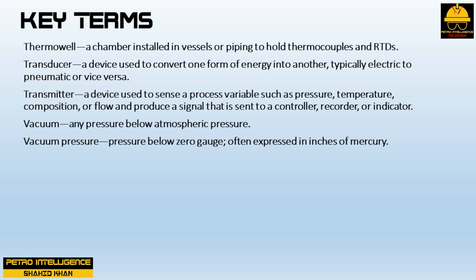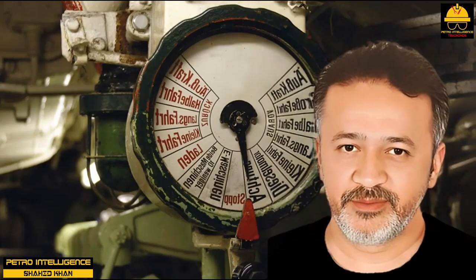A transducer is a device used to convert one form of energy into another, typically electric to pneumatic or vice versa. A transmitter is a device used to sense a process variable such as pressure, temperature, composition, or flow and produce a signal sent to a controller, recorder, or indicator. Vacuum is any pressure below atmospheric pressure; vacuum pressure is often expressed in inches of mercury.